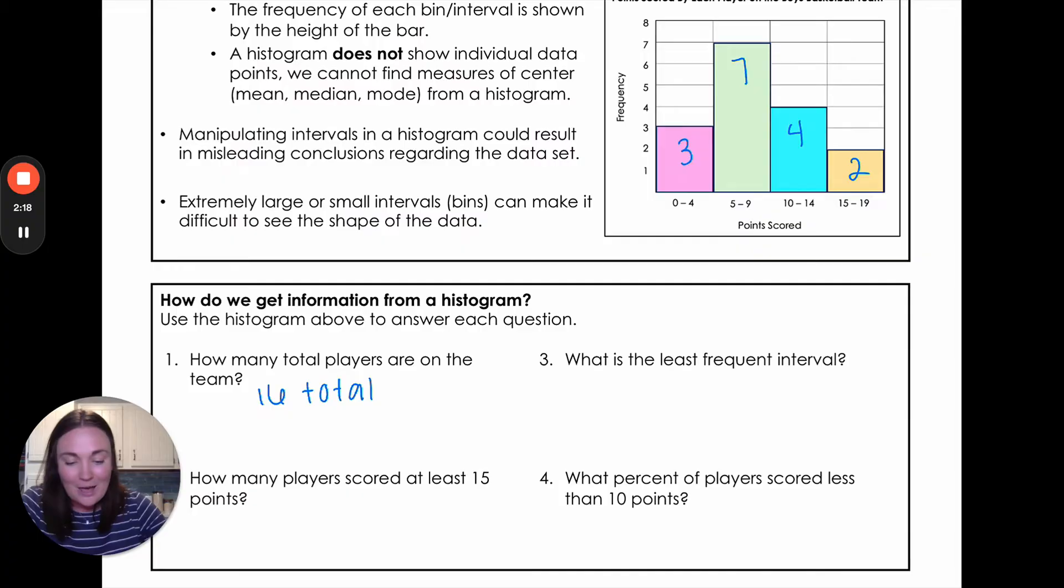Okay, number two, how many players scored at least 15 points? So at least is 15 or greater and the only interval that fits into that 15 or greater is this last one. So we know that there were two players that scored at least 15 points. Number three is asking what's the least frequent interval. So remember frequency is how tall those bars are. So we're looking for the shortest one overall. And the shortest one is that same one we were just looking at 15 to 19.